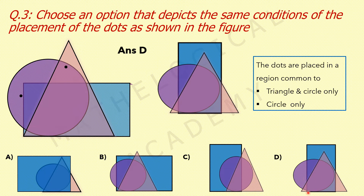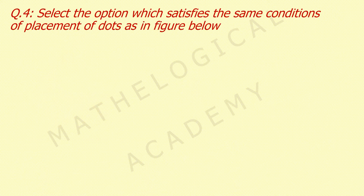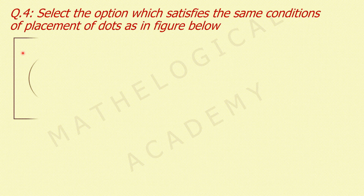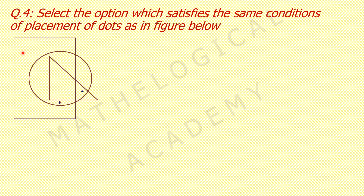Option C: only circle is there and the region lying between circle and triangle only is also there in this corner, so this is our answer. Question 4: select the option which satisfies the same conditions of placement of dots as in the figure. This time we are getting realistic — in an examination you will get this type of figure, not colored figures. So let's do it more practically this time.